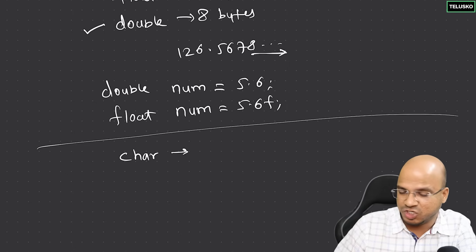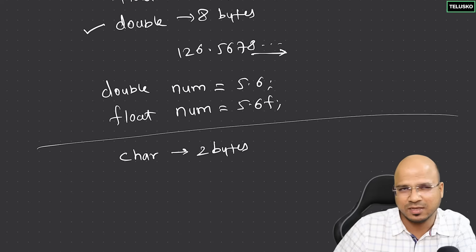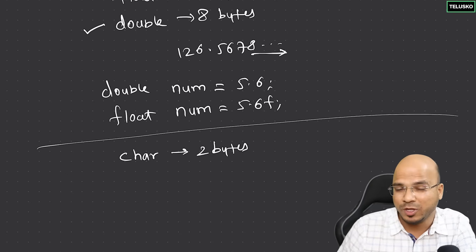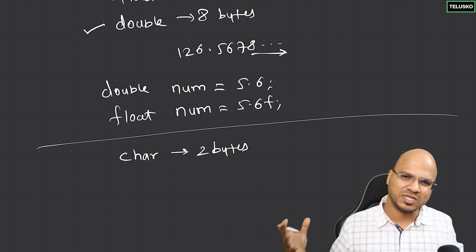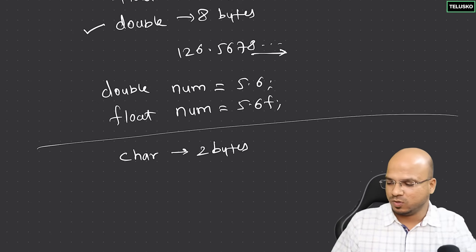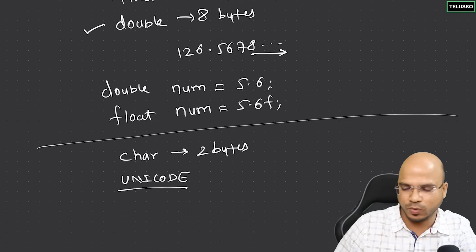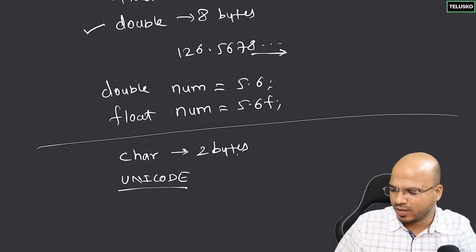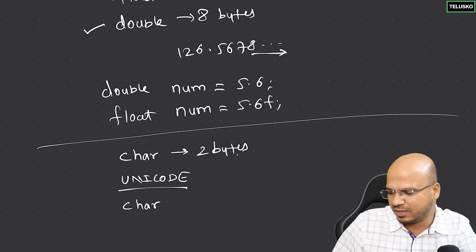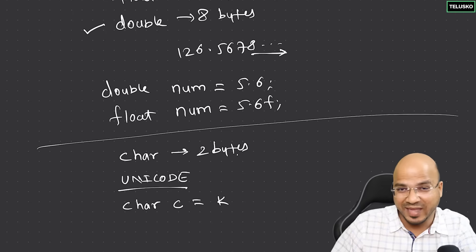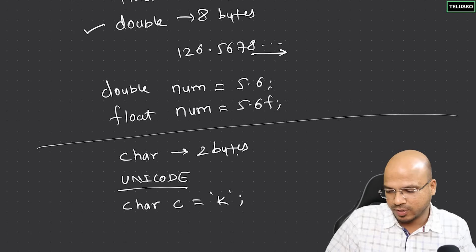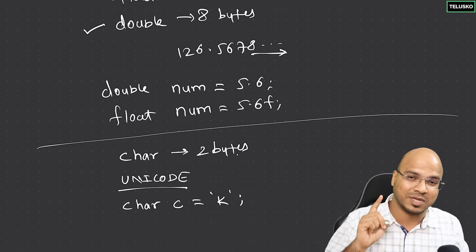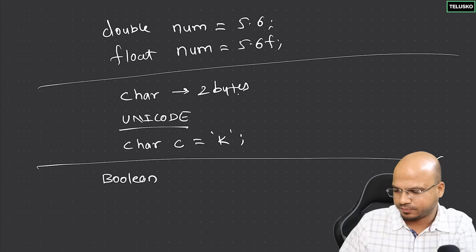For characters, in other languages like C a char is one byte using ASCII values. But in Java, char is two bytes — 16 bits — because Java follows Unicode, not ASCII, allowing it to support characters from all languages in the world, not just English. So it has a bigger range. To define a character variable, you say char, give it a name like c, and assign a character in single quotes: char c = 'k'. You must use single quotes for characters, not double quotes, and it only accepts a single character.